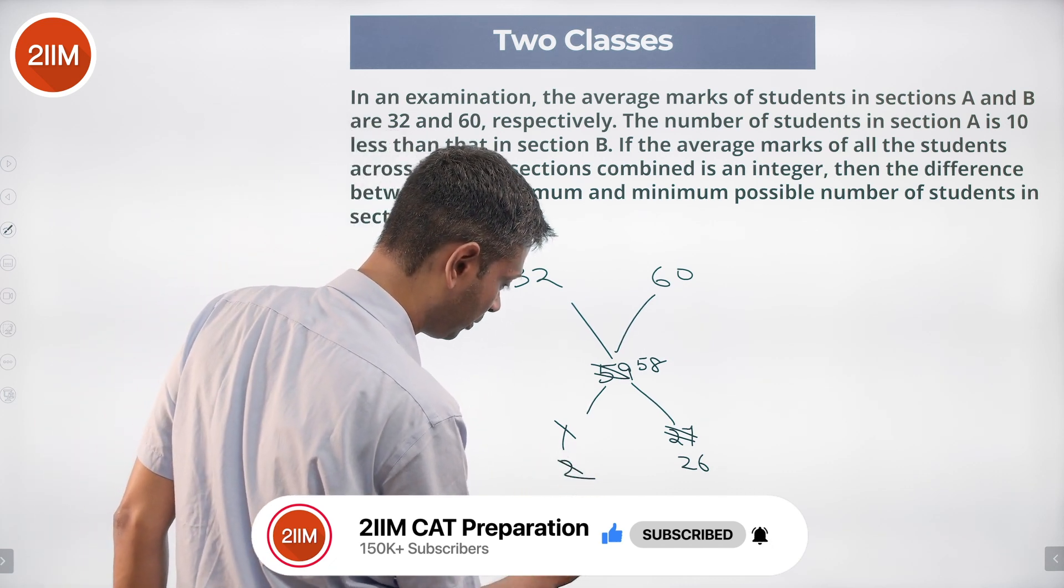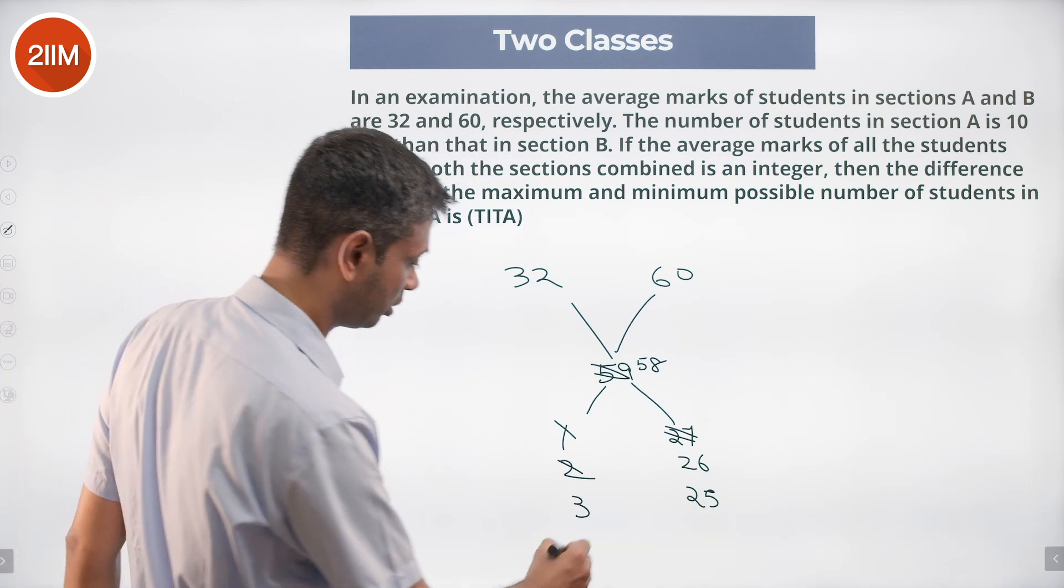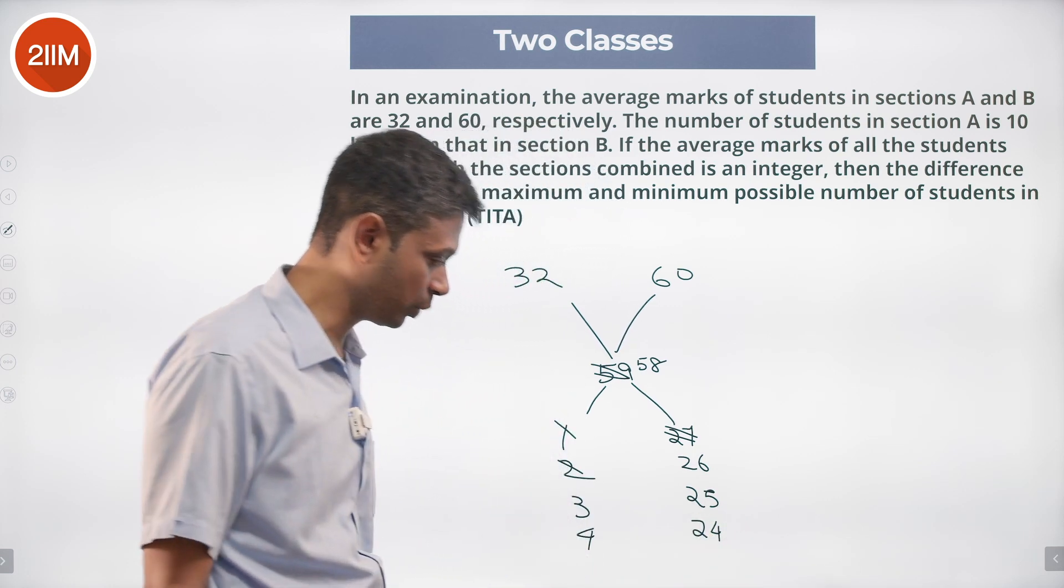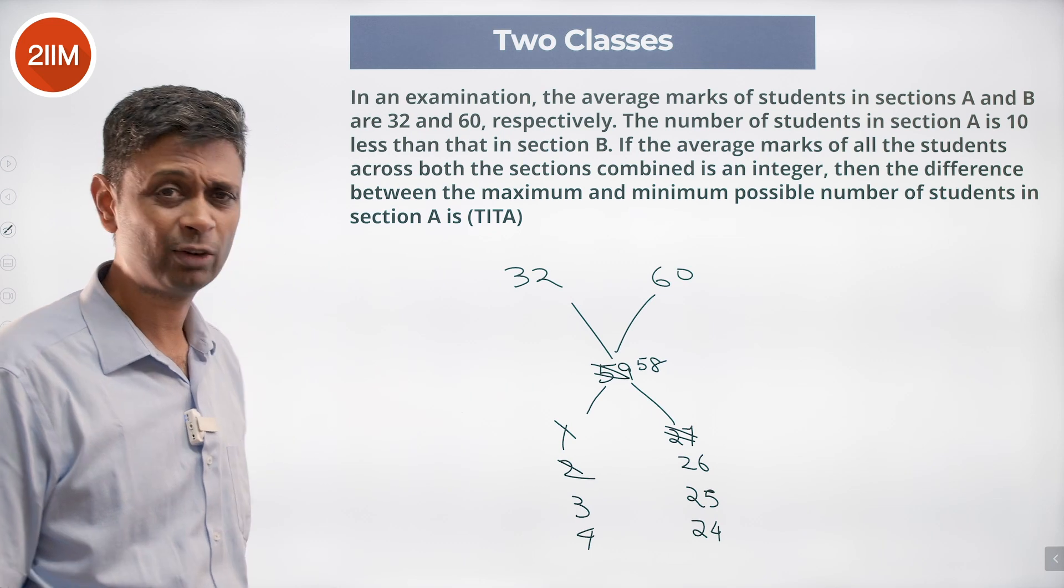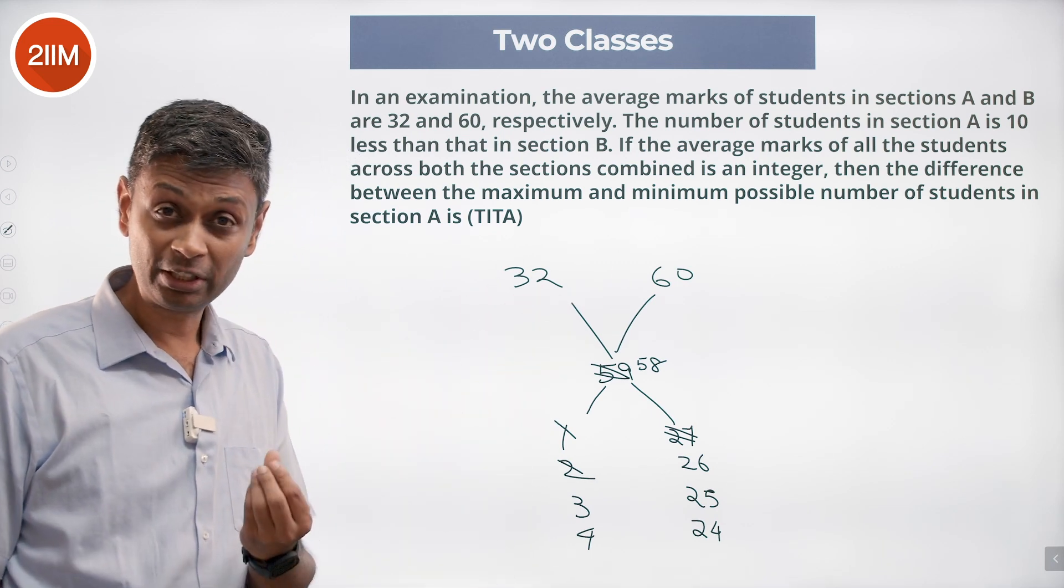Make this 3 and 25, differences 22X doesn't work. Make it 4 and 24, differences 21X doesn't work. I want the difference to be equal to 10. The sum of these two is 28, the difference should be a multiple of 10.